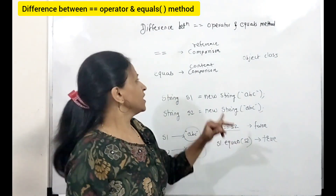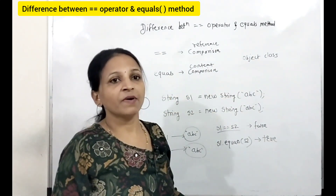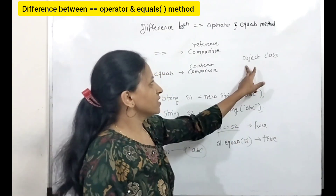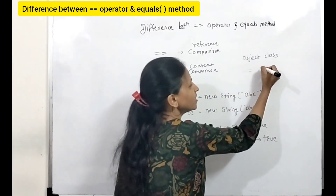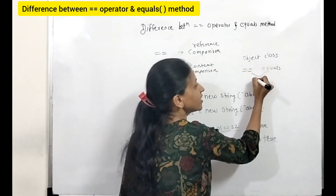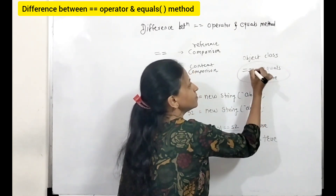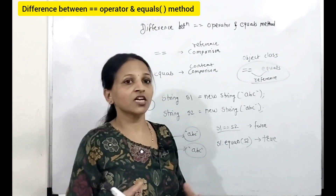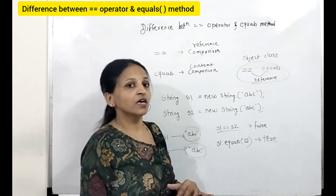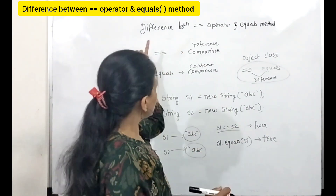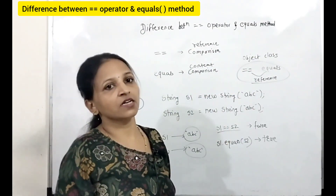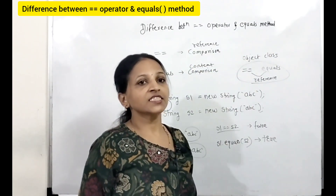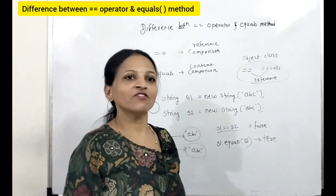These points you must know. The main basic difference is: the equality operator is for reference comparison and the equals method is for content comparison. But keep in mind that if you are directly considering the Object class, both are for reference comparison. In general you can say equality operator is for reference comparison and equals method is for content comparison. That's all about the difference between equality operator and equals method. In the next session we will see one more important question for your Java interview preparation. Till then take care, bye-bye.